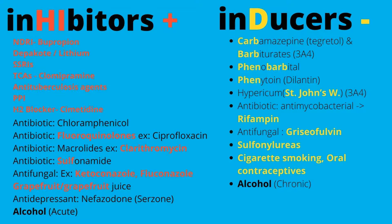There are many mnemonics out there — choose the one that works best for you. On this slide I have both inhibitors and inducers listed. What works best for me is knowing the categories of drugs, and I mainly focus on the inducers because everything else is most likely an inhibitor. Especially for psychiatry: the NDRI category — Wellbutrin, also known as bupropion — is an inhibitor. Depakote and lithium are also inhibitors, and SSRIs are very common inhibitors in psychiatry.